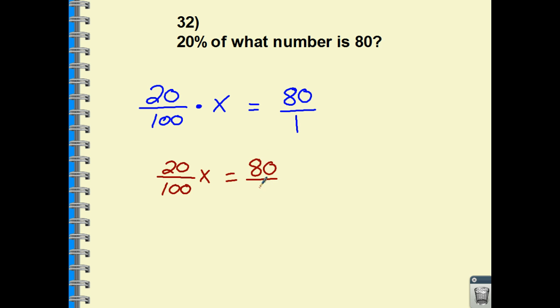Now, how do you get rid of a fraction when it's touching a variable? Our rule is to multiply both sides by the reciprocal of that fraction. So we have 100 over 20, and we must do the same thing to the other side. Do your cancellations. These are going to all cancel out, and you're left with x equaling—let's cancel here. 1 and 4. 4 times 100 is 400. 400 divided by 1 is still 400. So 20% of what number is 80? 20% of 400 is equal to 80. So x is 400.